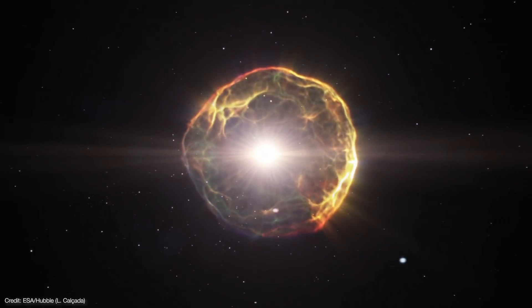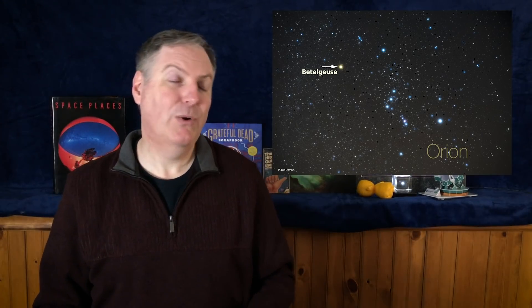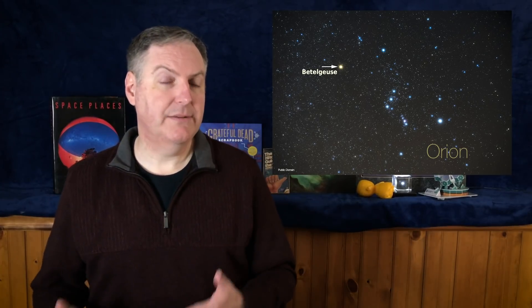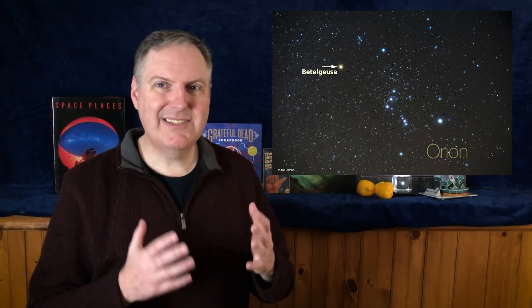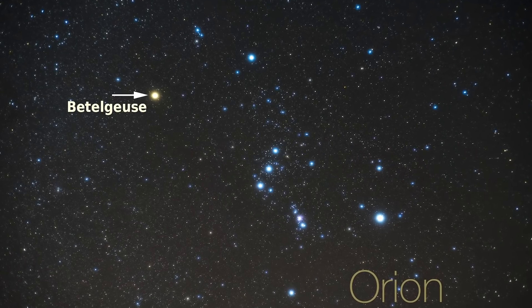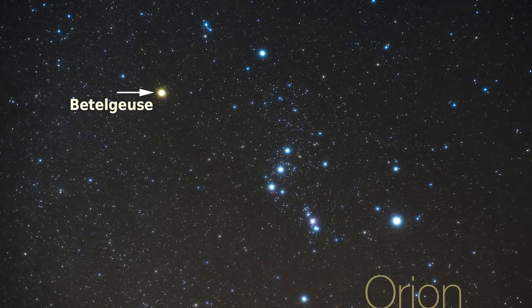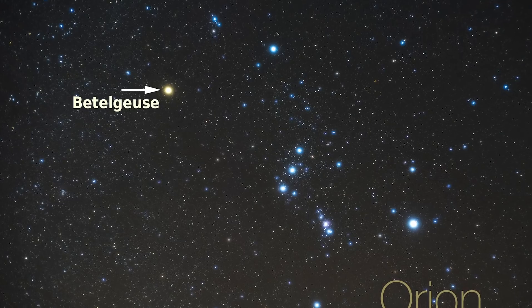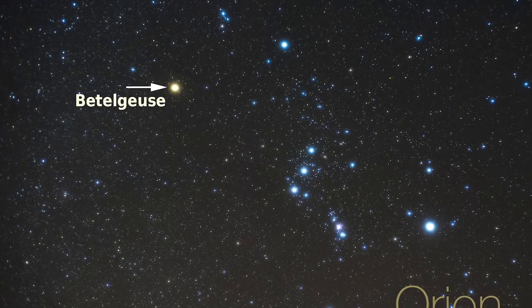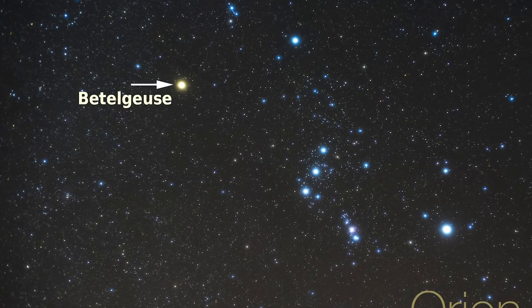In the meantime, Betelgeuse is still the faintest it's been in recent history and quite possibly much longer. Although nobody has a crystal ball, it's probably going to return to brightness at some point. The only thing is we just don't know when that will be, which makes the star so insanely cool and mysterious. So I invite you to go outside from time to time and take a look at Betelgeuse while it's still visible in the winter sky. See if you can watch the star change in brightness.